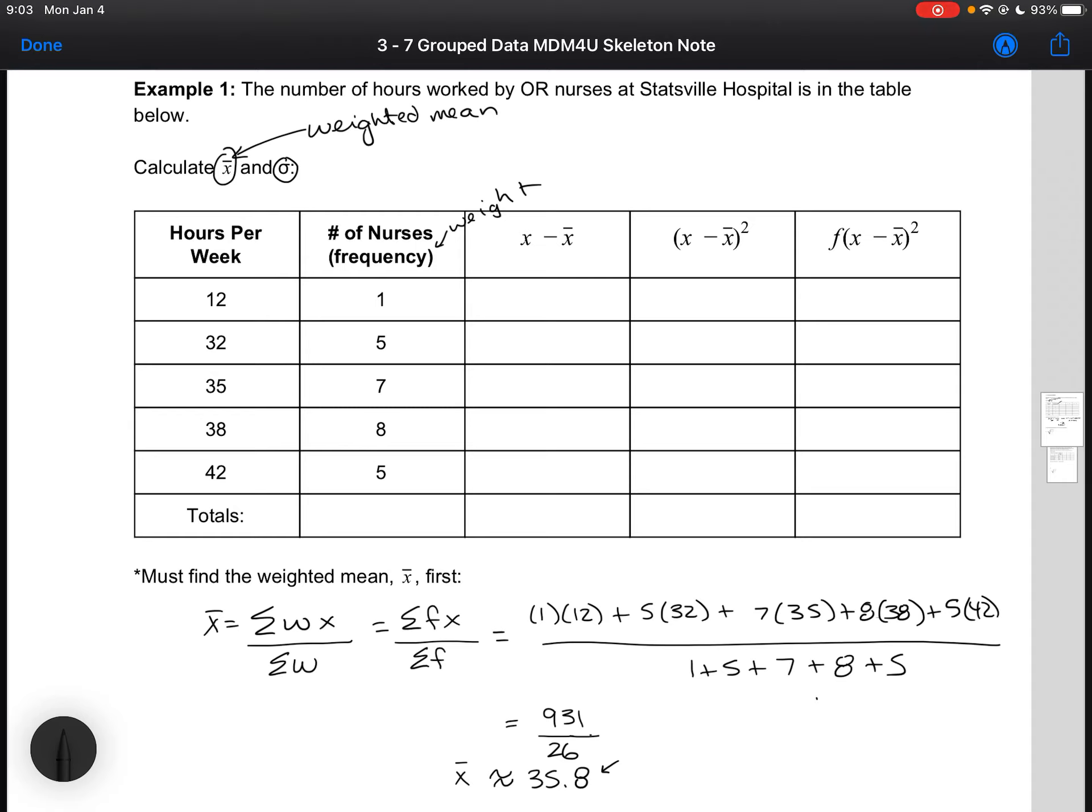By now calculating the weighted mean, now we can go ahead and calculate our deviation, so x minus x̄. And then we can calculate our deviation squared. And then finally, because we have a frequency table, we're going to multiply our frequency. So this is our column 2, multiplied by column 4.